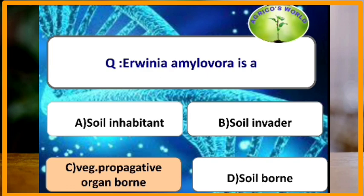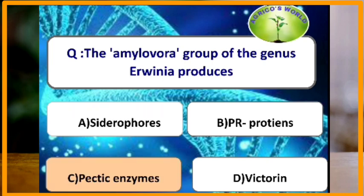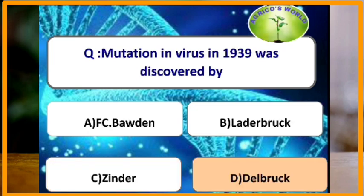Erwinia amylovora causes fire blight of apple; it is vegetatively propagative and organ-borne. The amylovora group of the genus Erwinia causes blights and produces pectic enzymes.